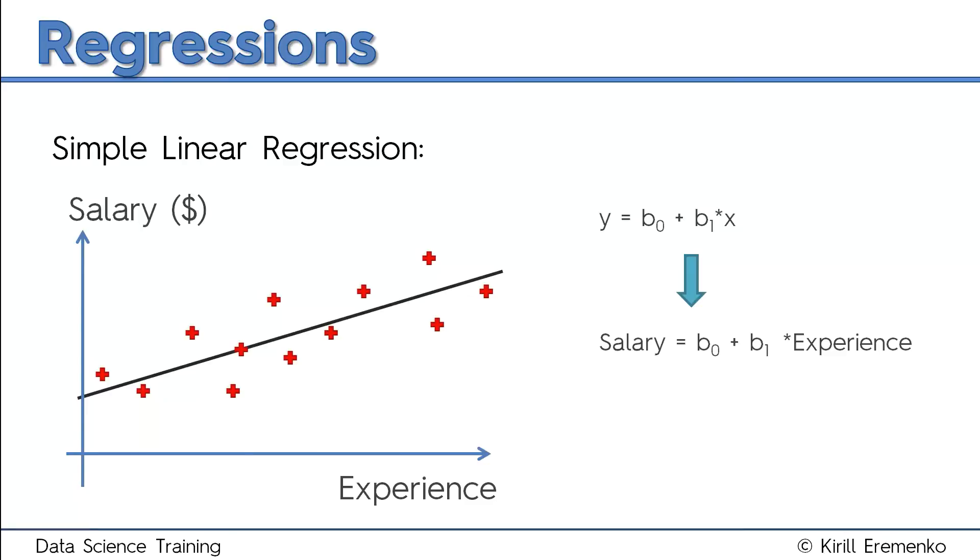We'll talk more about that in the next tutorial. For now, let's focus on the coefficient and constant. What does the constant mean? The constant is the point where the line crosses the vertical axis. Let's say it's $30,000. When experience is zero, as you see on the horizontal axis, the second part of the formula—b1 times experience—becomes zero. So salary equals b0, meaning salary equals $30,000 when a person has no experience.